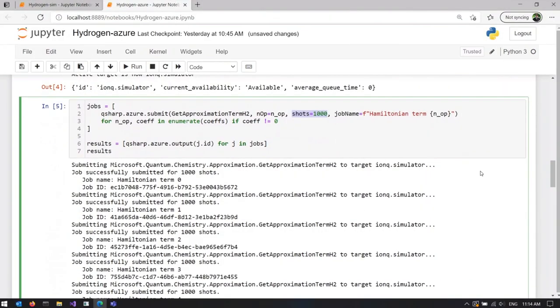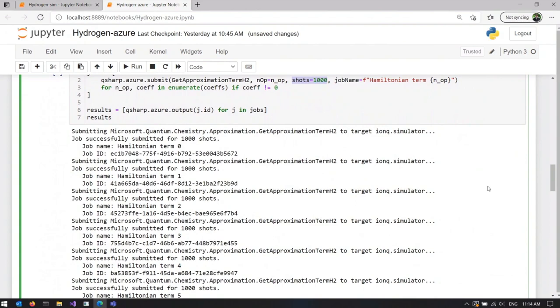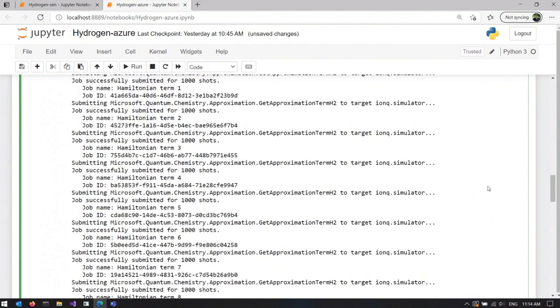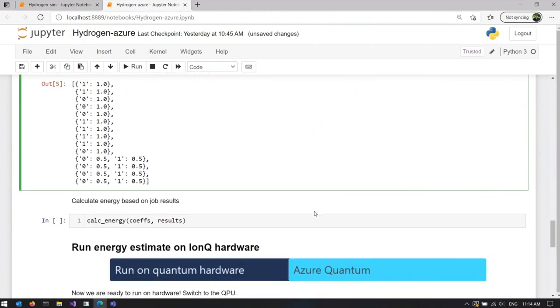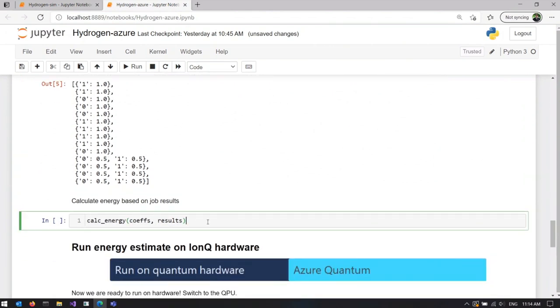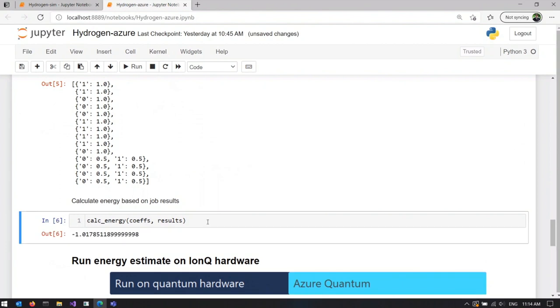And then we process those statistics to figure out the most likely outcome, which is the answer we're looking for. So you see, we have successfully submitted multiple jobs to the simulator and we got the results back.